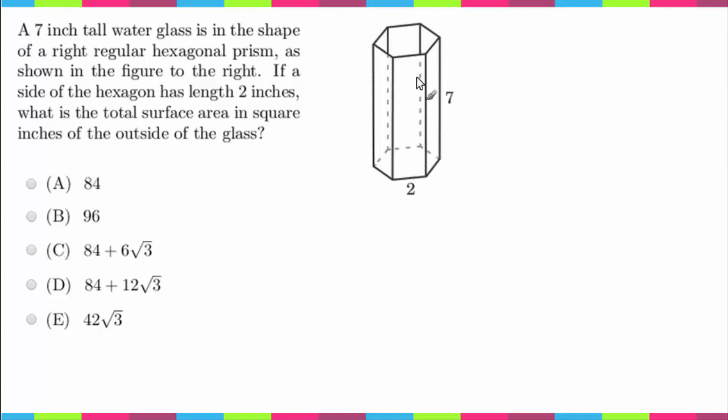I would first find the area of these six rectangles here, I would add all of those together, and then I would find the area of this hexagon and add that area to the total area.